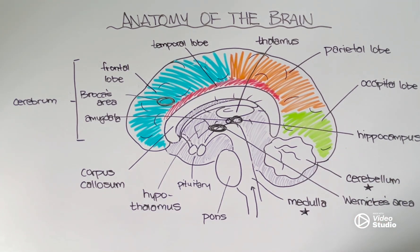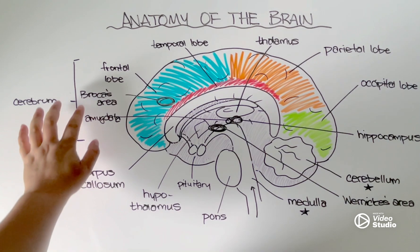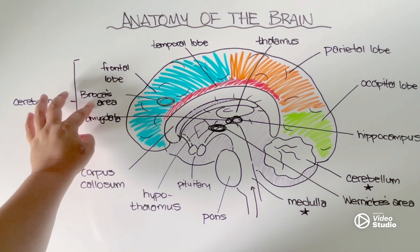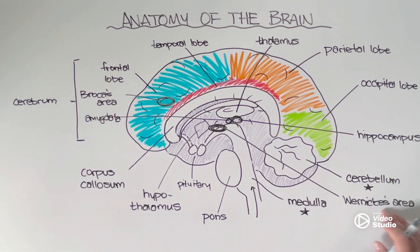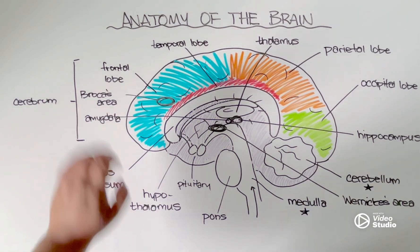Damage to Wernicke's area, of course, would have totally different symptoms. If you have damage to this area, you actually can't understand what people are saying to you, even though you would be capable of producing speech. Less easy to retrain the brain compared to Broca's area.